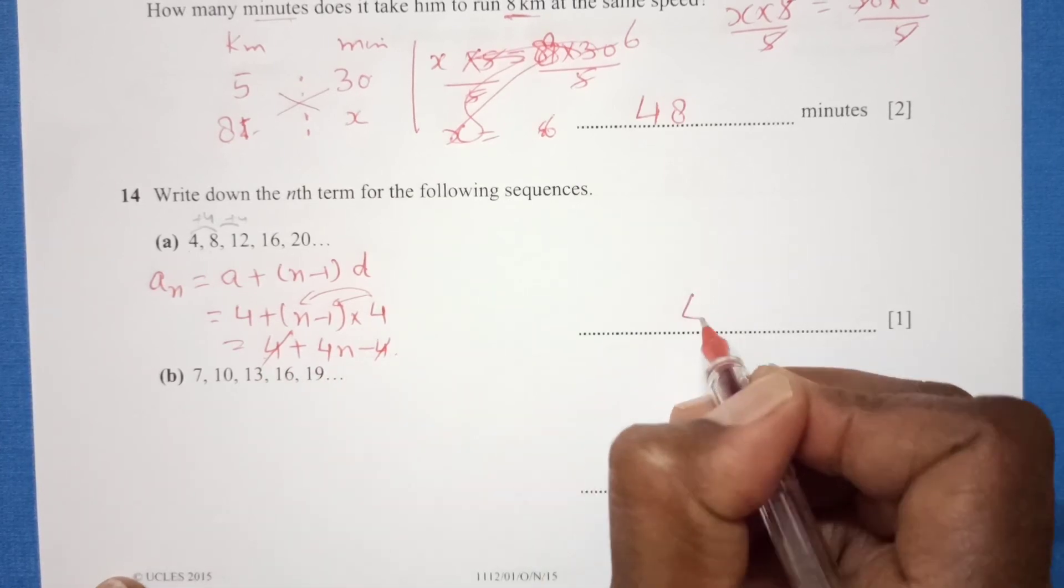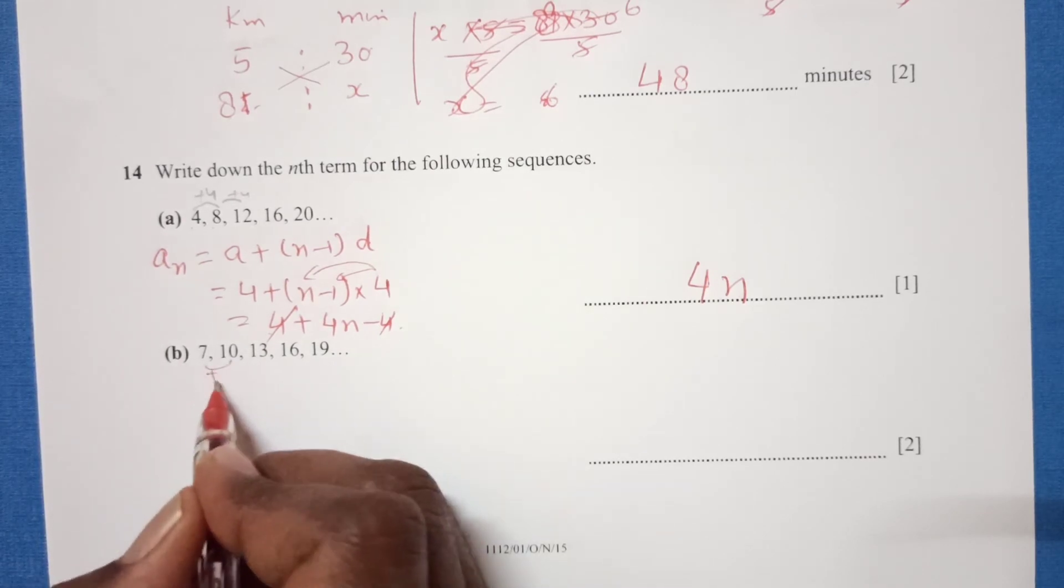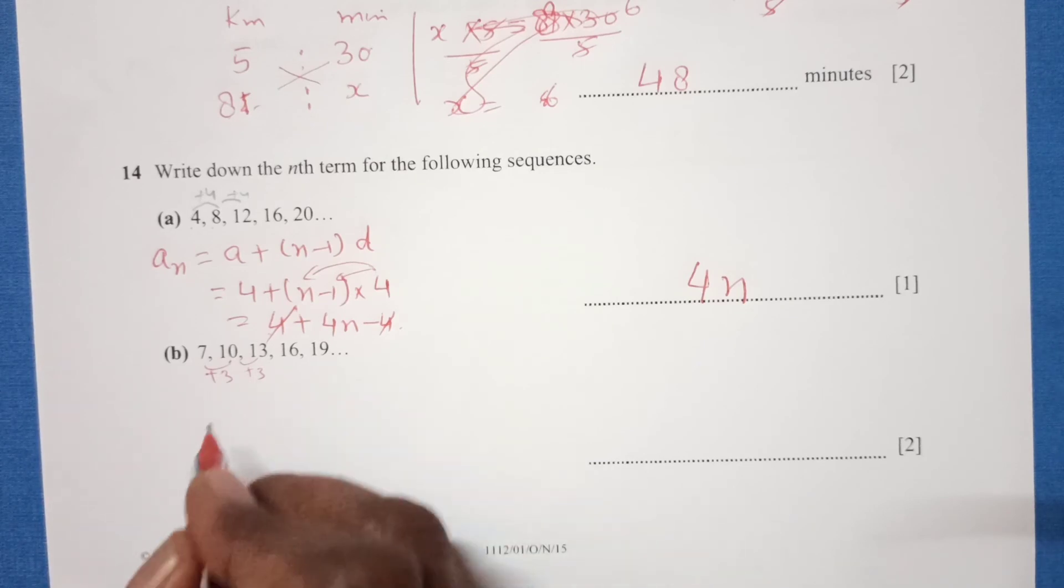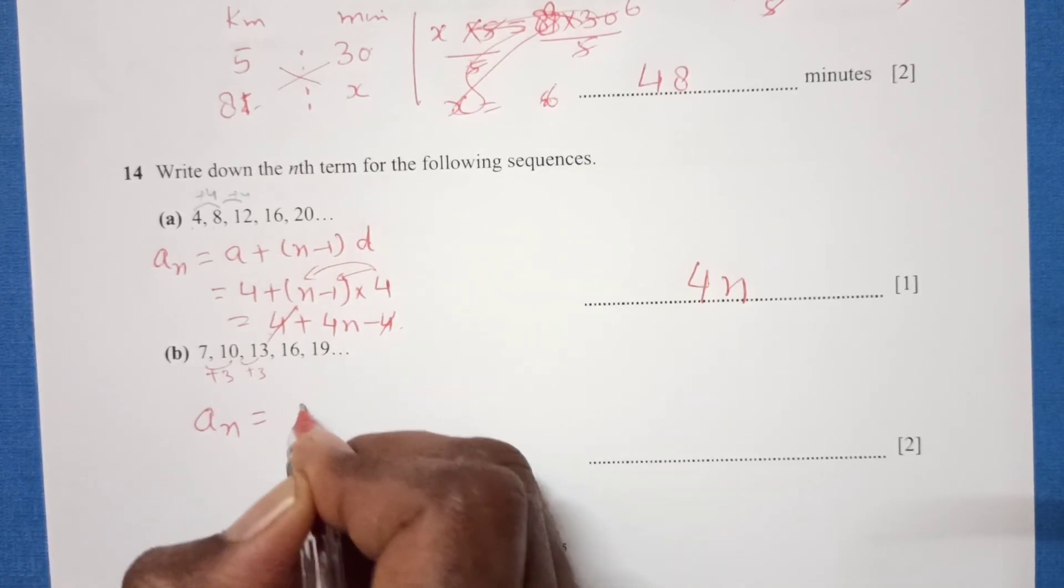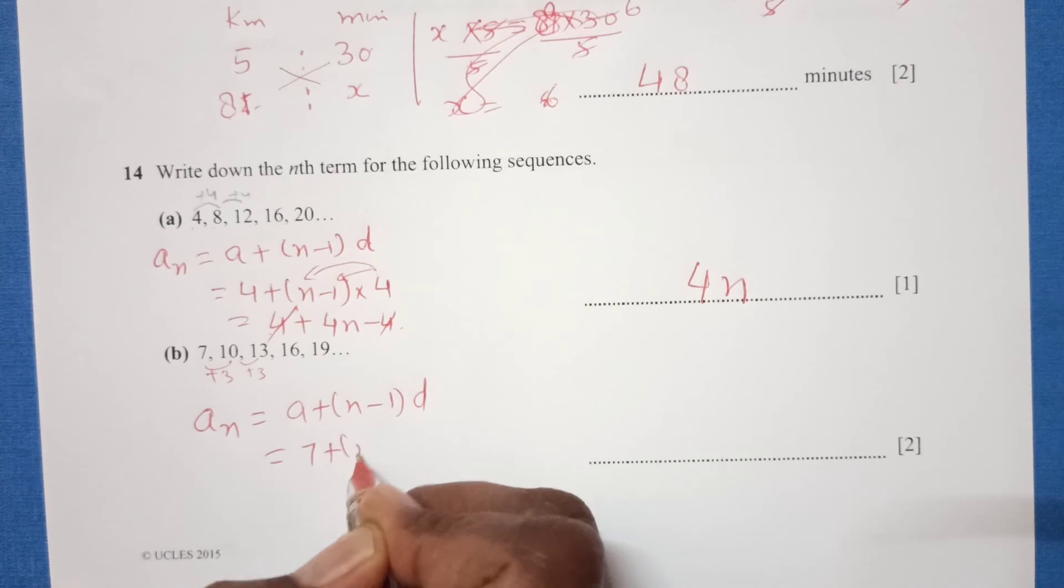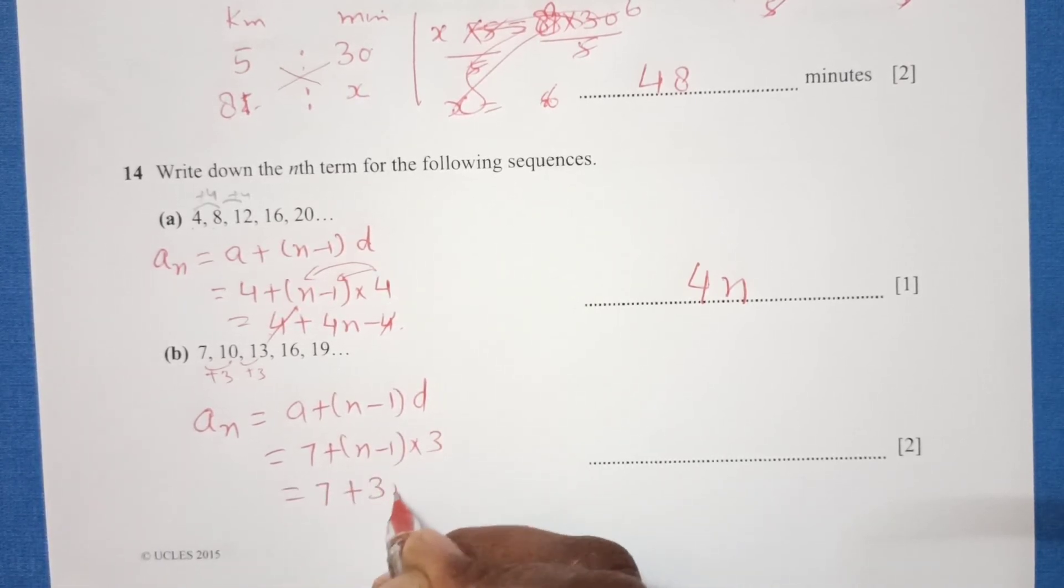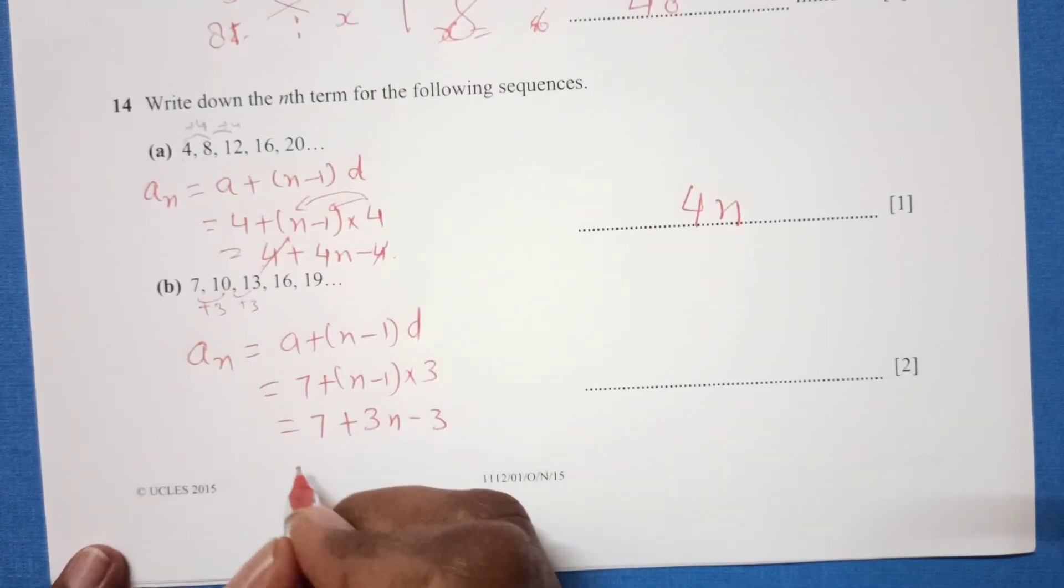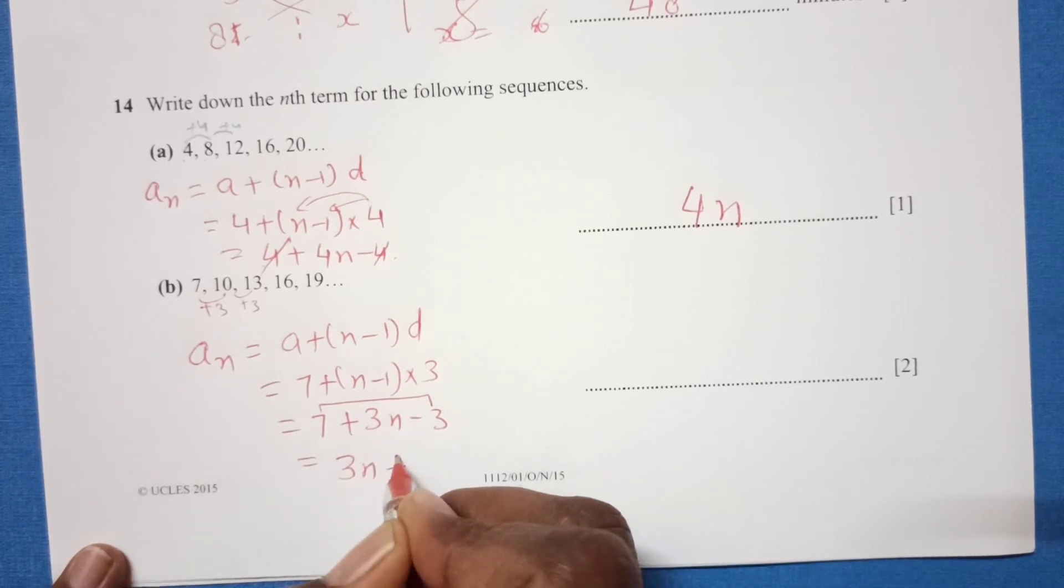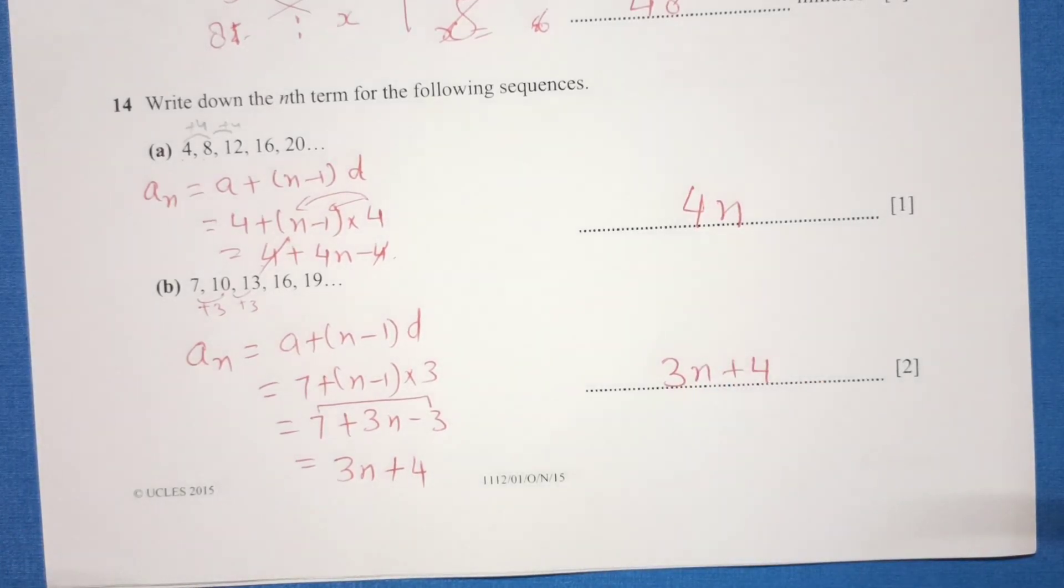Similarly, when you add 3 you are getting the next term, so common difference is 3. We use the same formula: a plus n minus 1 into d. A is 7 plus n minus 1, common difference is 3. So 7 plus 3n minus 3. 7 minus 3 is 4, 3n plus 4. This is going to be our final answer.